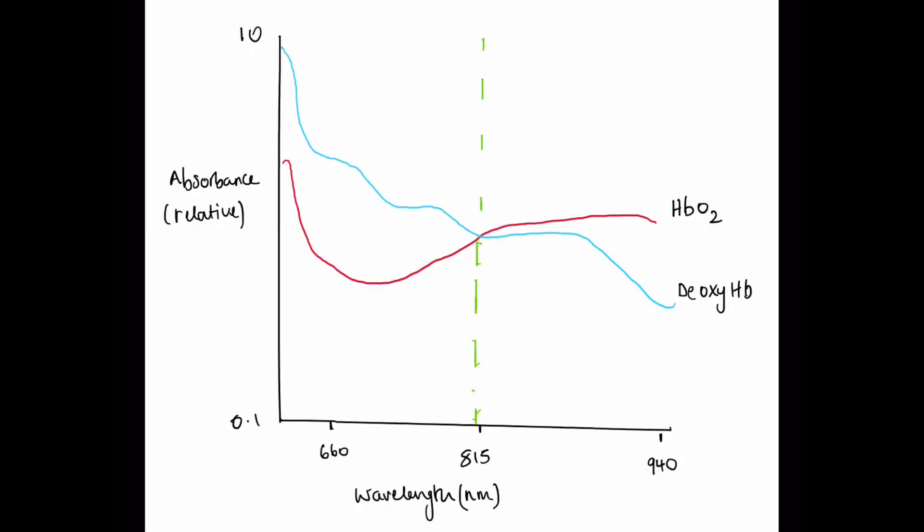Here we can see the typical graph. On the x-axis we've got wavelength in nanometers. On the y-axis we have absorbance which is relative. The red line represents oxygenated hemoglobin and the blue line represents deoxygenated hemoglobin.